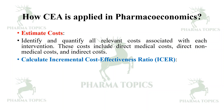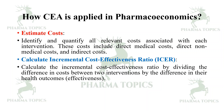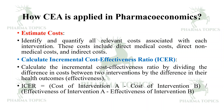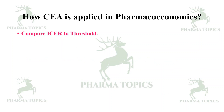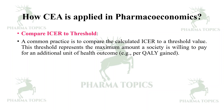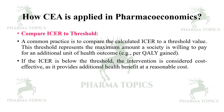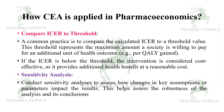Calculate the Incremental Cost-Effectiveness Ratio (ICER) by dividing the difference in cost between two interventions by the difference in their health outcomes: ICER = (Cost of Intervention A − Cost of Intervention B) ÷ (Effectiveness of Intervention A − Effectiveness of Intervention B). Then compare the ICER to a threshold value — this threshold represents the maximum amount a society is willing to pay for an additional unit of health outcome, for example per QALY gained. If the ICER is below the threshold, the intervention is considered cost-effective. Conduct sensitivity analysis to assess how changes in key assumptions impact the results.